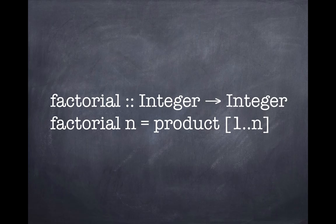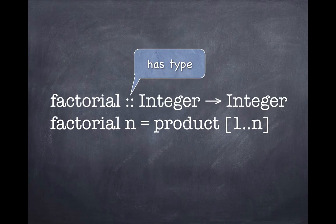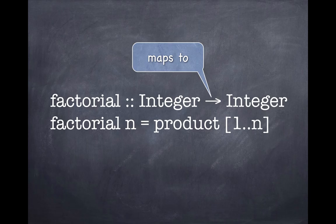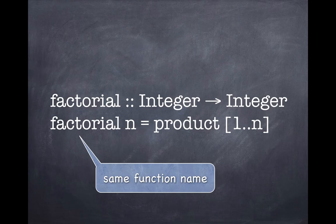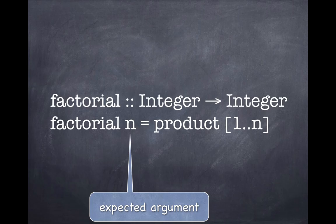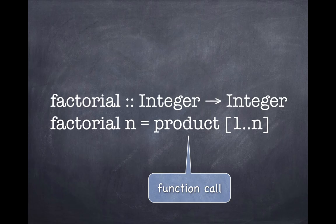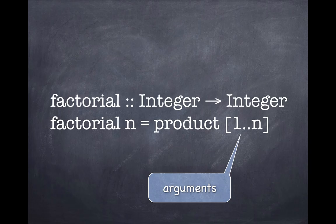This is an actual Haskell program. This is the name of a function, then you have a double colon which is read as 'has type,' then you have an input type, maps to, and an output type. So basically, factorial has type integer maps to integer. The first line is a type definition and the second is a function definition. Then you have a named argument which you know will be of type integer. The function is defined using 'product,' one of the functions in the standard library, with an argument that is a list going from one to n.